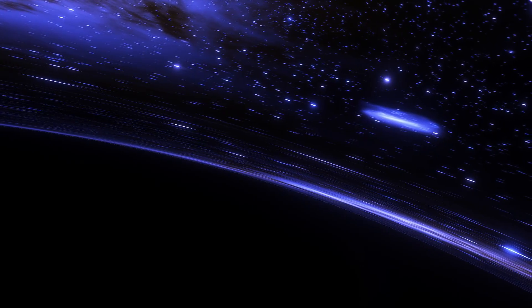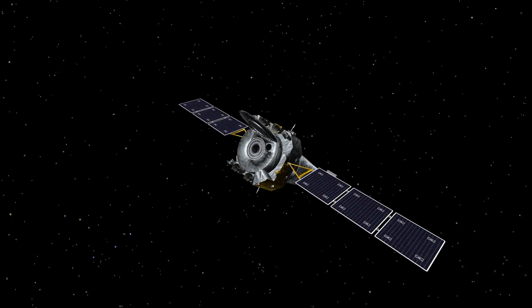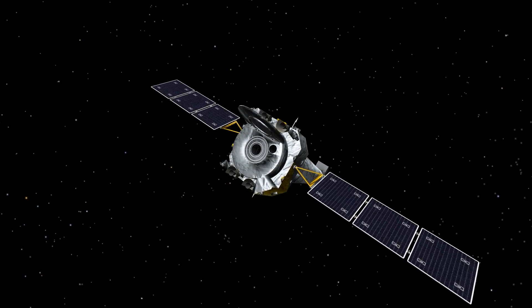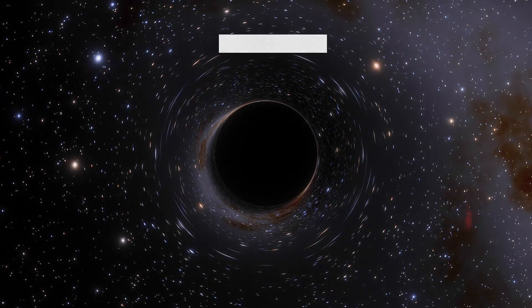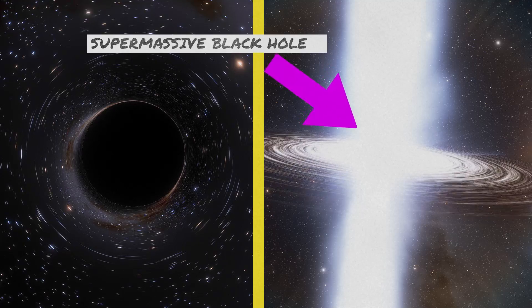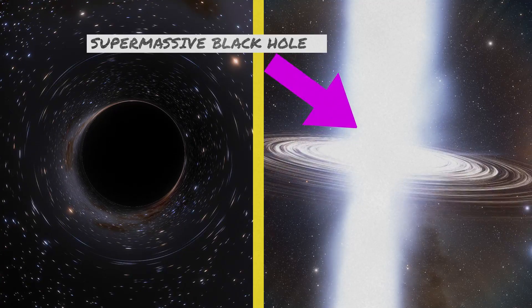Even though a black hole doesn't emit or reflect any detectable type of light, humans can measure the radiation emitted by the surrounding area of a black hole. Let's take stellar-mass black holes. Don't confuse them with the supermassive black holes in the middle of galaxies.